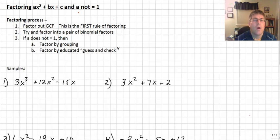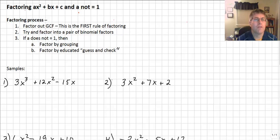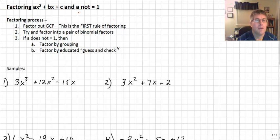Welcome back. We're going to take another look at factoring and do a little bit more in-depth factoring here. We're going to factor trinomials again, but now the coefficient on x squared — the quadratic term — is not going to equal 1. Its absolute value is going to be greater than 1.